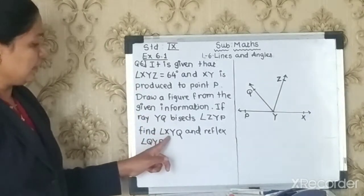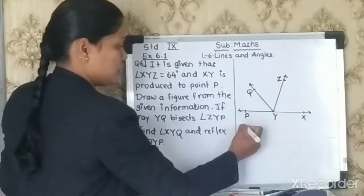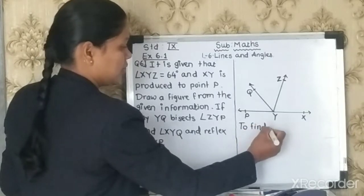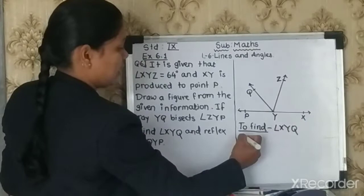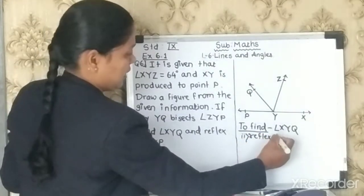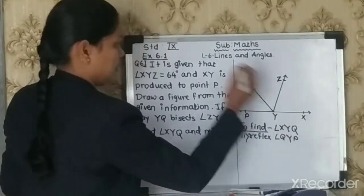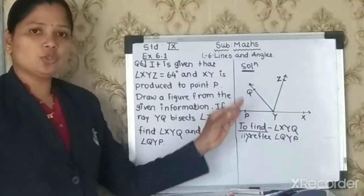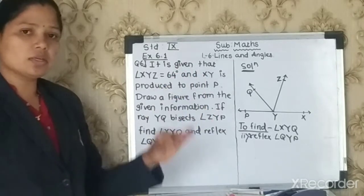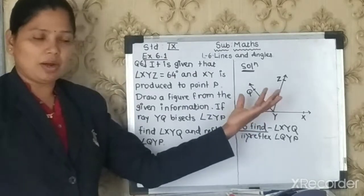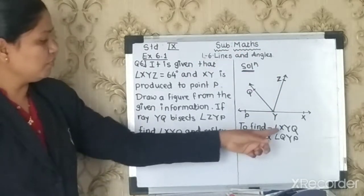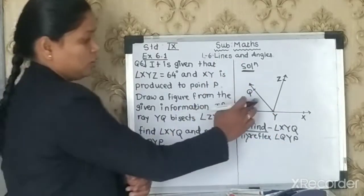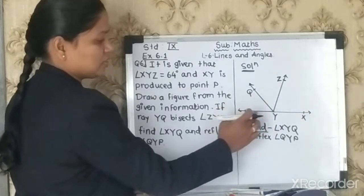We are going to find angle XYQ and reflex angle QYP. To find angle XYQ, we first find angle ZYP. Since XYZ and ZYP are linear pair angles, angle XYZ + angle ZYP = 180°. So angle ZYP = 180 - 64 = 116°.